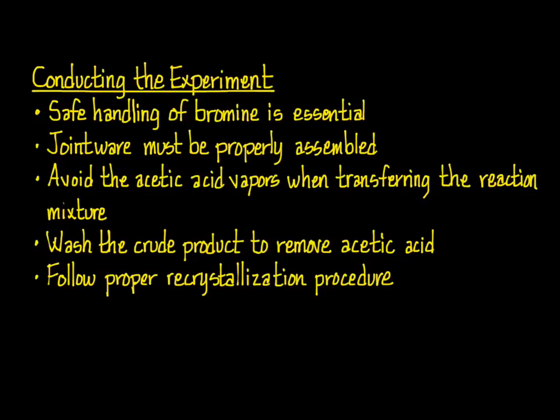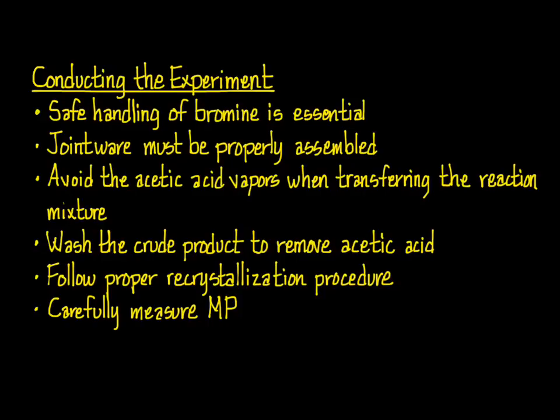Final purification is accomplished by recrystallizing from 50% aqueous ethanol, using the process learned in the recrystallization experiment. You'll need two Erlenmeyer flasks — place the crude product in one and 50% aqueous ethanol in the other. After heating the solvent to just below boiling, add small portions to the solid, allowing it to boil briefly between additions until the solid dissolves. Then remove the flask from heat, cover it, allow it to stand on the bench top until crystals form and it reaches room temperature. Transfer to an ice water bath for 10 to 15 minutes before recovering the crystals by vacuum filtration. Once you have dry, purified crystals, measure their melting range carefully and slowly, and consider repeating the measurement to ensure accuracy.